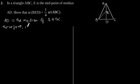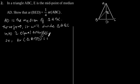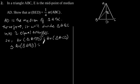Therefore, AD will divide triangle ABC into 2 equal triangles. So, area of triangle ABD is equal to area of triangle ACD. This implies area of triangle ABD is equal to half of area of triangle ABC. Let's call this Equation 1.